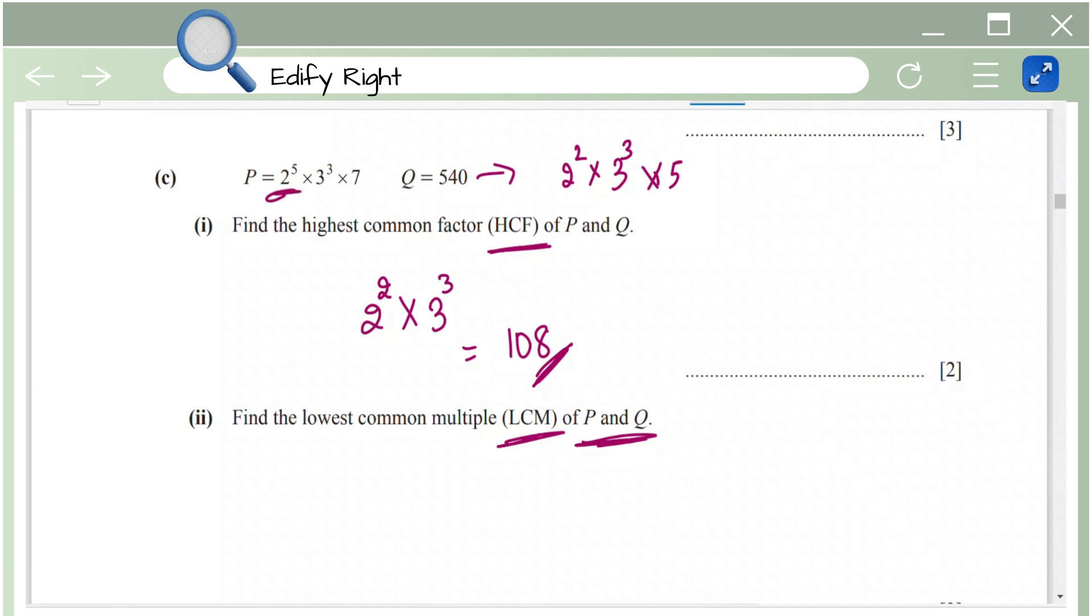So basically here you have 2 power 5 and 2 power 2, out of these two you're going to consider the highest power which is 2 power 5. Then you have 3 power 3 in both the cases so you're going to write it as it is and then you have 7 and 5 which are not common factors of these two but still you're going to be taking both of those numbers into consideration. So you're going to write into 7 into 5 and when you simplify this you get 30240 as your answer.